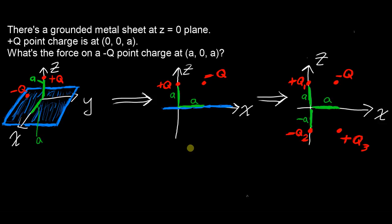Okay, so in this problem, you're told that there's a grounded conductive metal sheet at the z equals zero plane. There is a point charge of charge plus q at the point zero zero a, and there's also a point charge of charge negative q at the point a zero a. You're asked to find what is the force on this negative q point charge due to the plus q point charge.